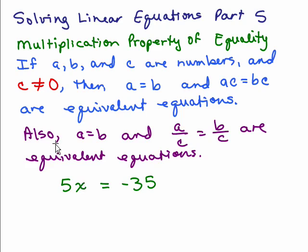Also, if A equals B and A over C equals B over C are equivalent equations, that's saying you could divide the same non-zero number by both sides of the equations and keep the solutions the same.